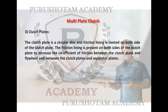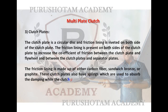The friction lining is present on both sides of the clutch plate to increase the coefficient of friction. This increases the coefficient of friction between the clutch plate and flywheel, and between the clutch plates and separator plates. The friction lining is made up of either carbon fiber, sandwich material, or graphite. These clutch plates also have springs which are used to absorb damping while the clutch plate rotates.